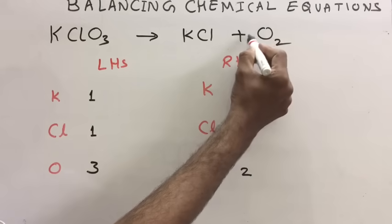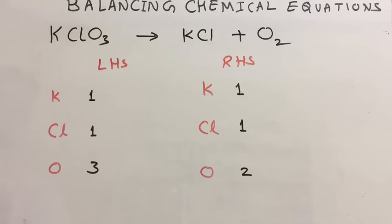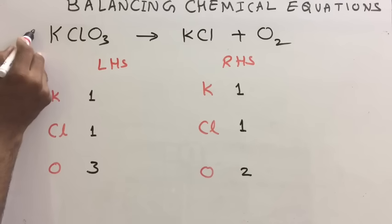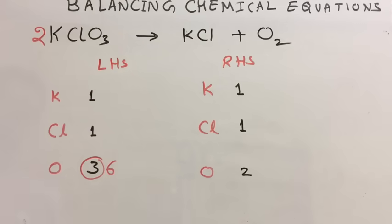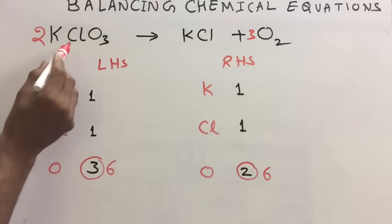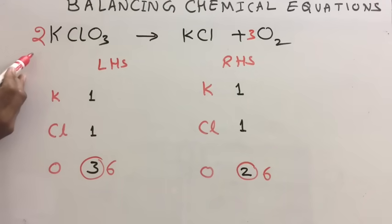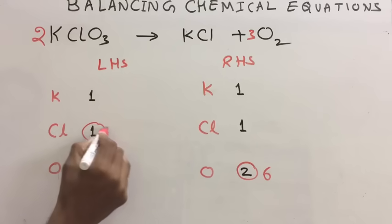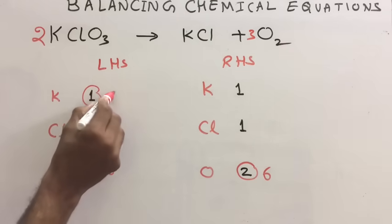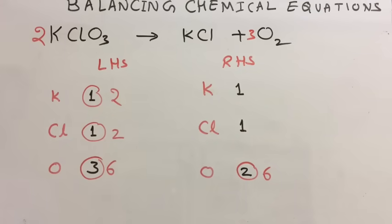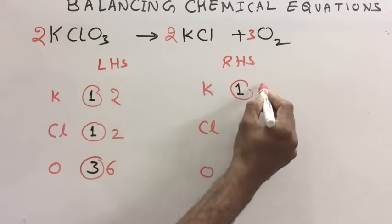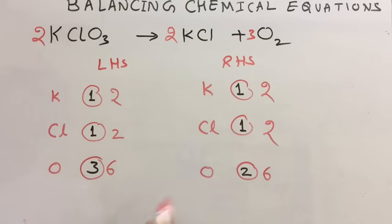If you write two on the LHS it becomes four — still unbalanced. Write two on the LHS side: two threes are six. Then write three on the RHS so three twos are six. Now recheck: chlorine became two and potassium became two on LHS, so multiply RHS with two — two potassium and two chlorine. Final check: two, two, six on LHS equals two, two, six on RHS — the equation is balanced.